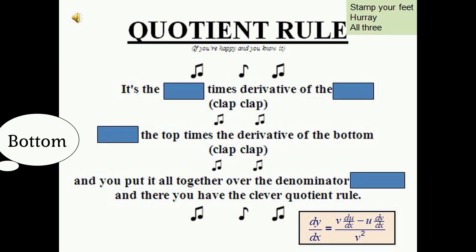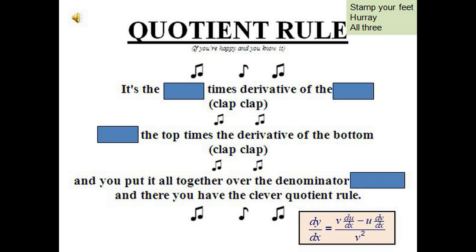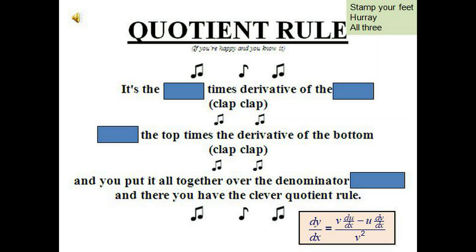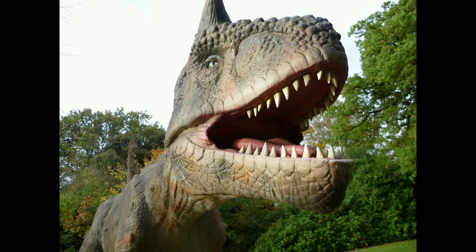It's the bottom times the derivative of the top, minus the top times the derivative of the bottom. And you put it all together over denominator squared. And there you have the clever quotient rule.